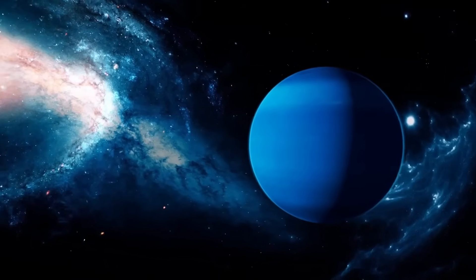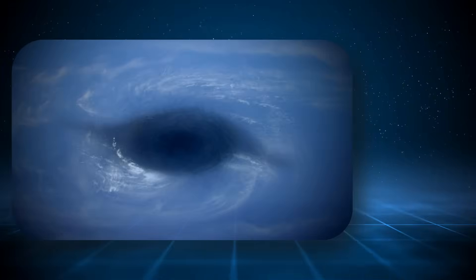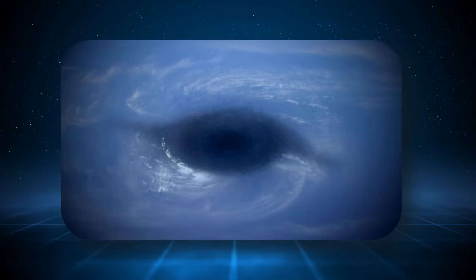These energy surges could then ripple outward, fueling the hyperactive atmosphere and spawning the planet's massive storm systems such as the now fading Great Dark Spot.